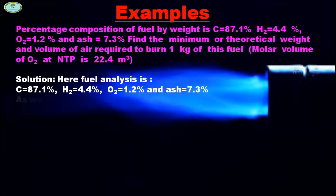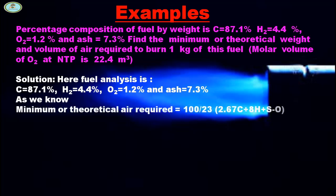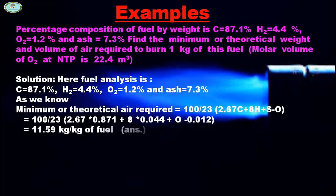Here fuel analysis is: C = 87.1%, H2 = 4.4%, O2 = 1.2%, S = 7.3%. As we know, minimum or theoretical air required is 100/23 × (2.67C + 8H + S - O). Putting all the values, we found that air required is 11.59 kg per kg of fuel.